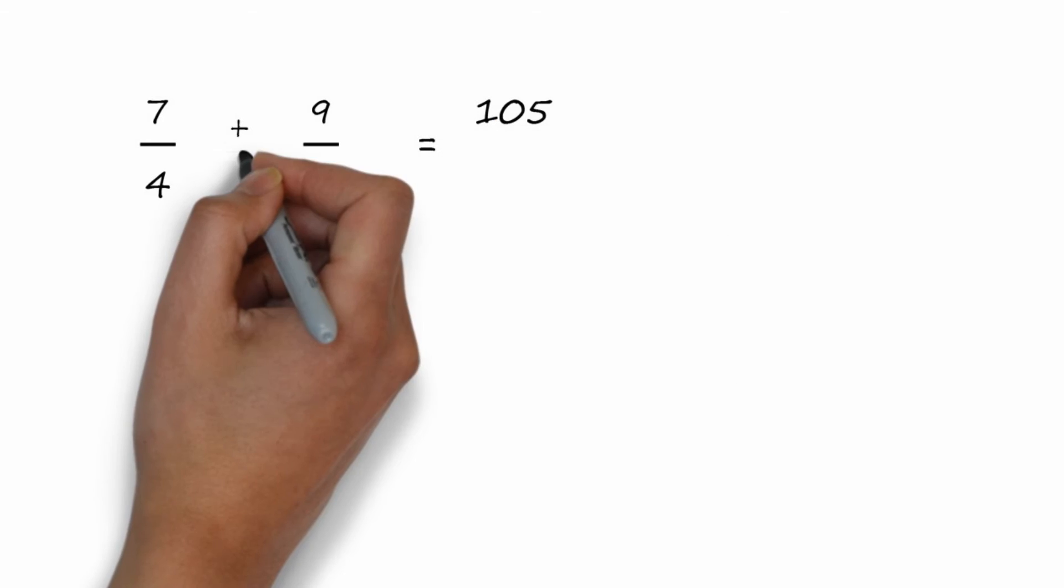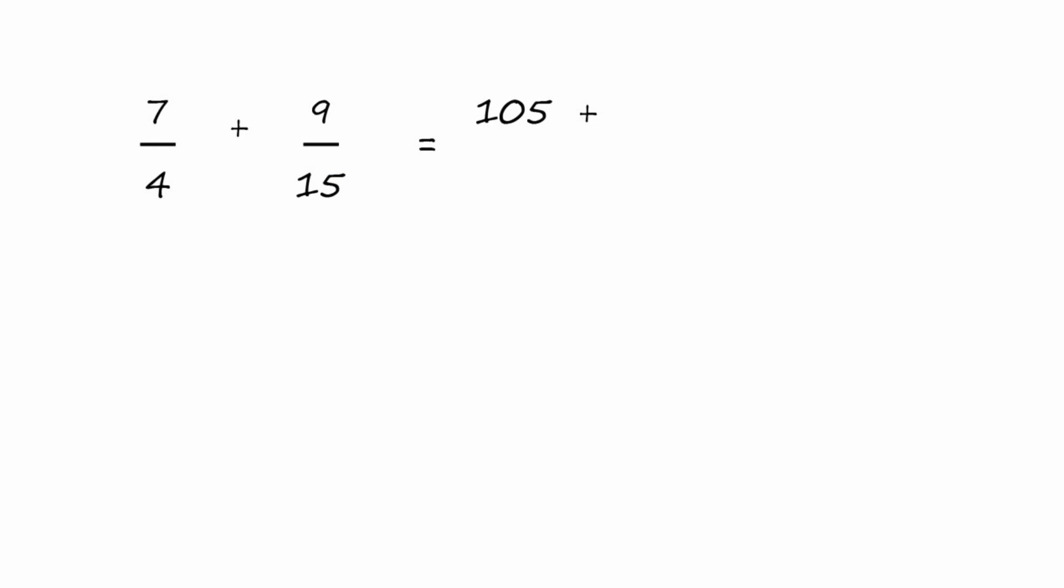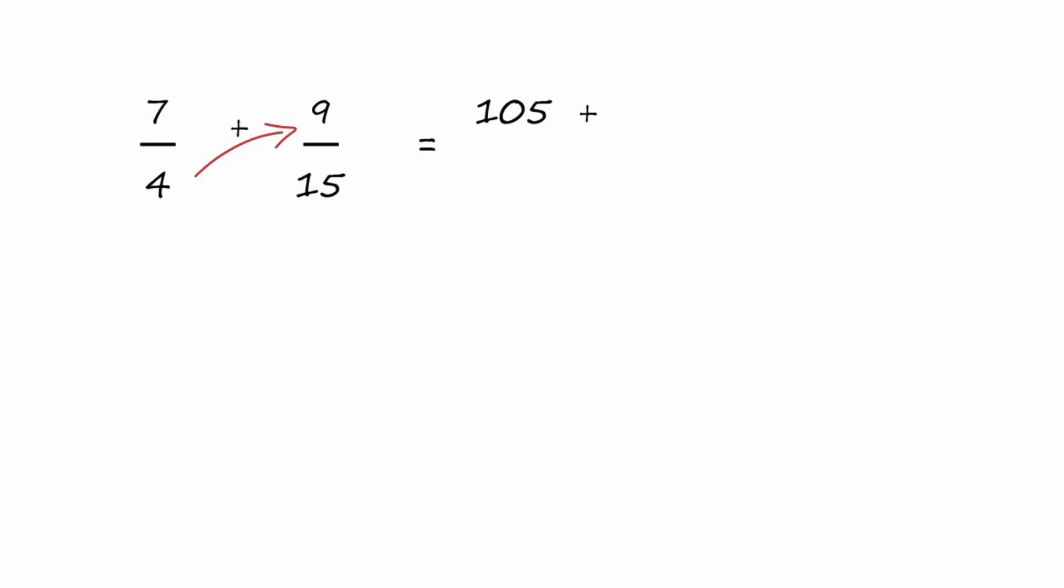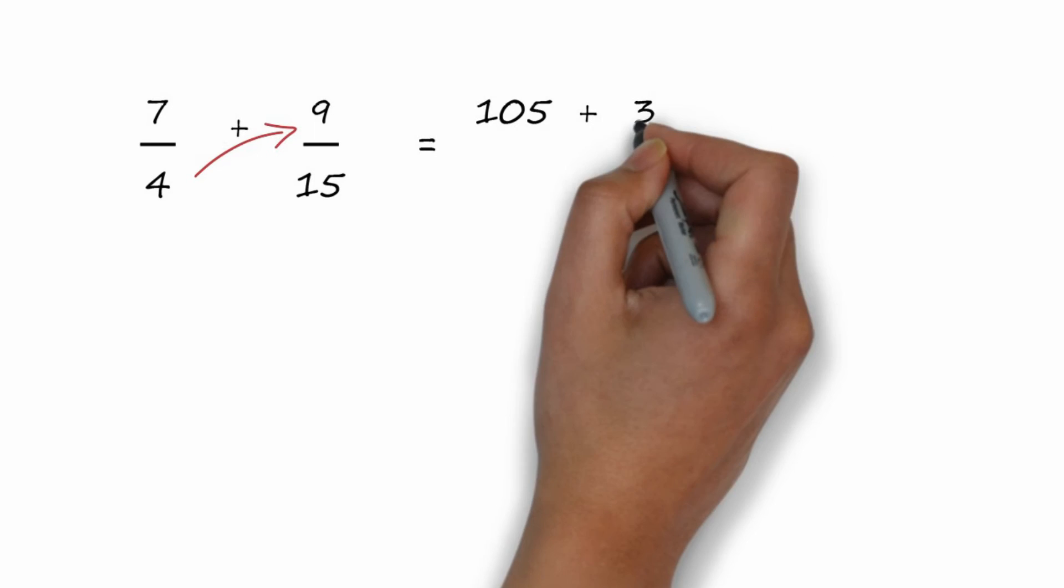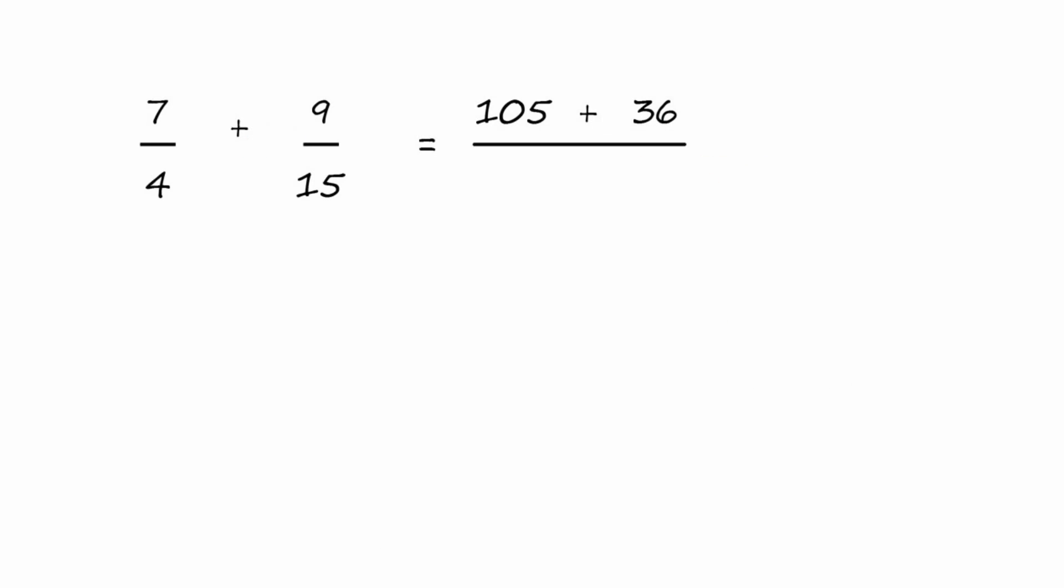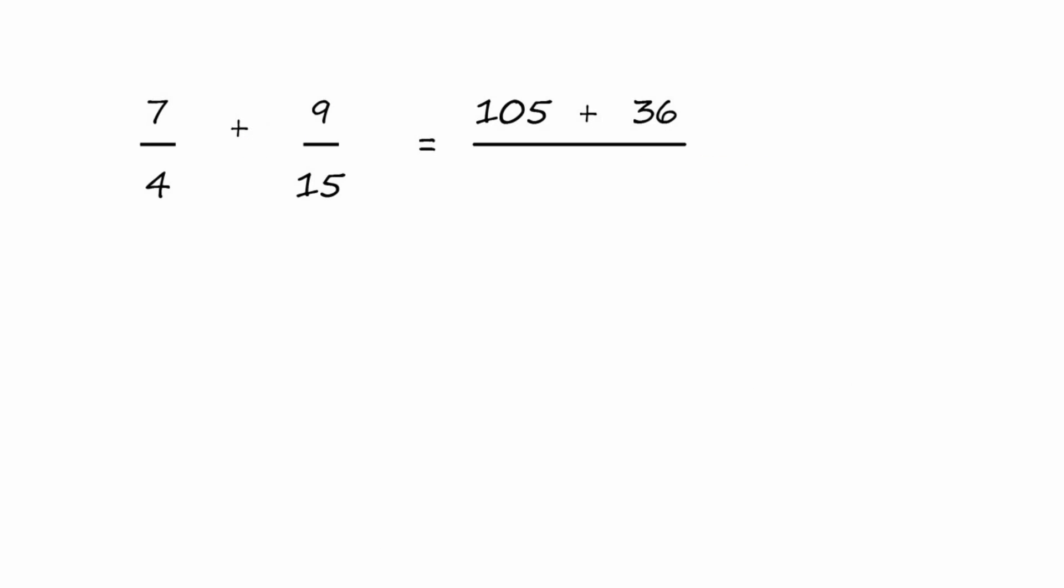Now this is addition, so we bring the plus sign over. And now it's lower left times upper right. Four times nine is 36 in the numerator. This is all over the two denominators multiplied together. Four times fifteen is 60, and that goes in the denominator.